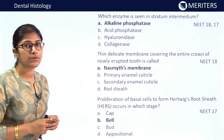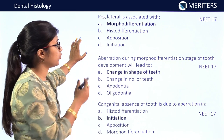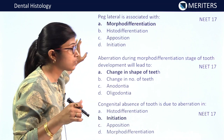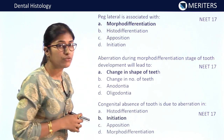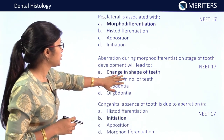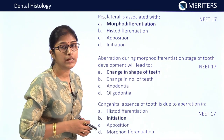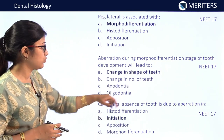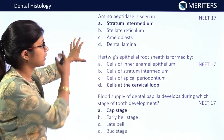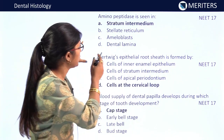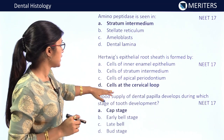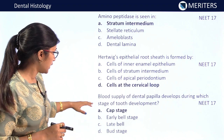Peg laterals is associated with morpho-differentiation — NEET 2017. Aberration during morpho-differentiation stage of tooth development leads to change in shape of teeth — NEET 2017. Congenital absence of tooth is due to aberration in initiation — NEET 2017. Minor peptidase seen in stratum intermedium — NEET 2017. Hertwig's epithelial root sheath is formed by cells at the cervical loop — NEET 2017.